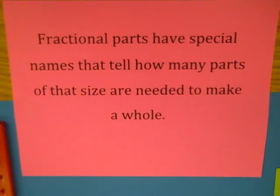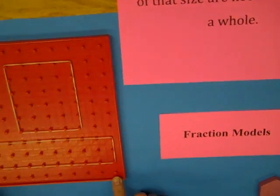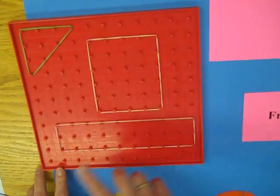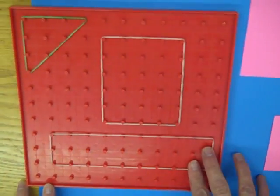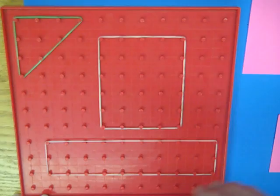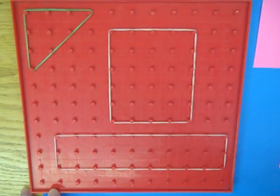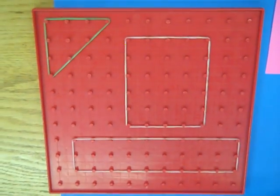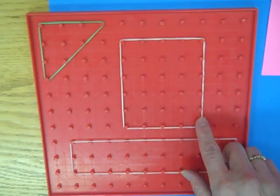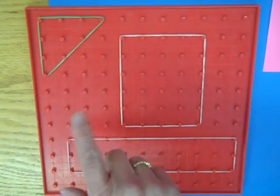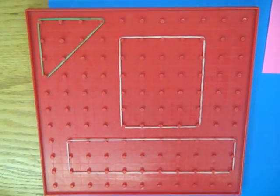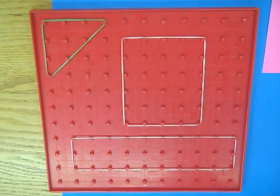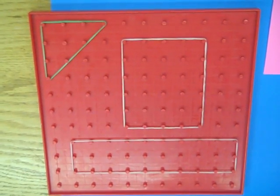So we're going to start out with models that are working with area. Your geoboard is a really nice place to start because elastics can be changed very quickly rather than having students draw them. So we have rectangles of different sizes, we've got triangles. Often we get stuck in using the same picture over and over again.